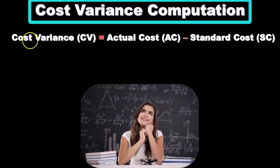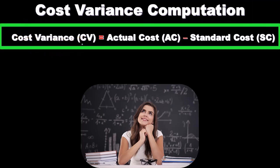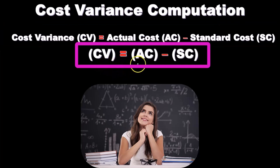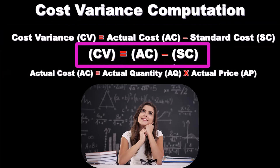As we go through the formulas, note that you're going to have abbreviations like CV, AC, and SC — you just have to get used to that. The cost variance, or CV, equals the actual cost (AC) minus the standard cost (SC). In other words, the cost variance equals the actual cost minus the standard cost.